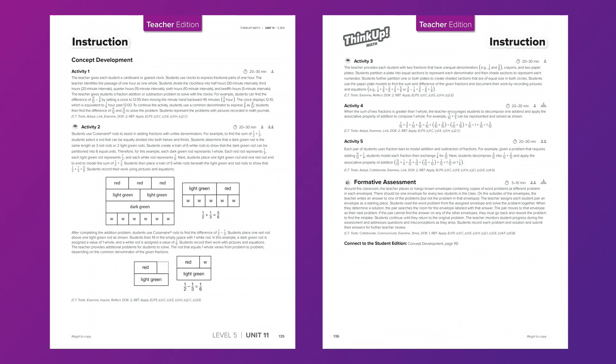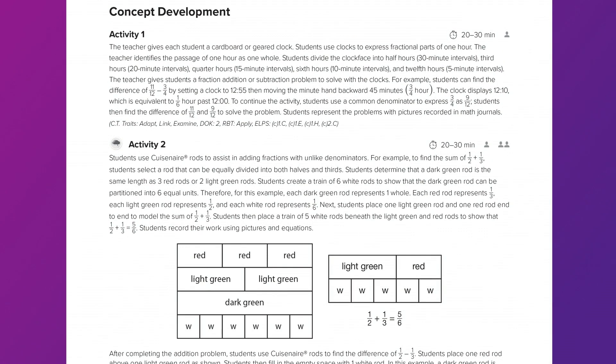Let's look specifically at Level 5, Unit 11. Five different instructional activities are provided. We will take a look at Activity 2. In this activity, students use Cuisenaire Rods to assist in adding fractions with unlike denominators.